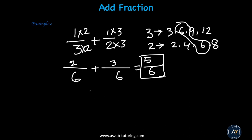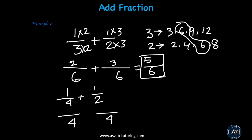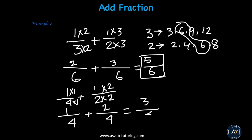Let's do another problem: 1 over 4 plus 1 half. The same way — find the common denominator, which in this case will be 4. What do you need to multiply 4 by to get 4? Just 1. What do you need to multiply 2 by to get 4? Two. So now you have 1 over 4 plus 2 over 4.